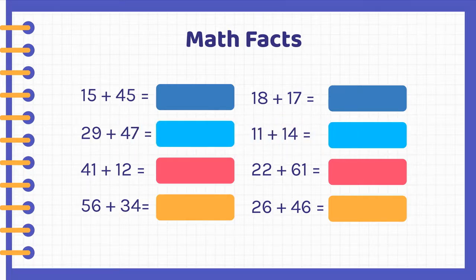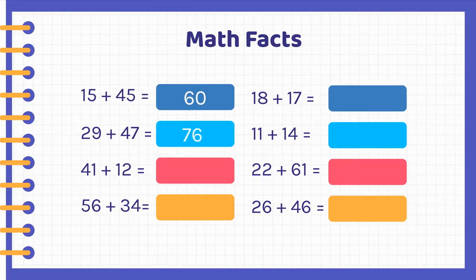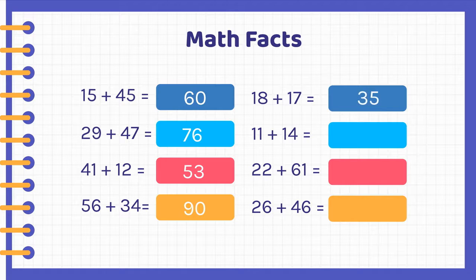We're back and we'll be going over the answers now. 15 plus 45 is 60. 29 plus 47 is 76. 41 plus 12 is 53. 56 plus 34 is 90. 18 plus 17 is 35. 11 plus 14 is 25. 22 plus 61 is 83. 26 plus 46 is 72.